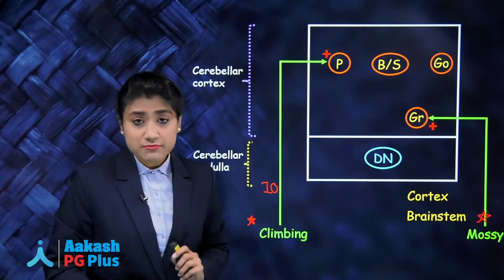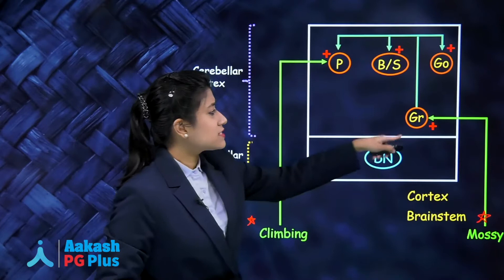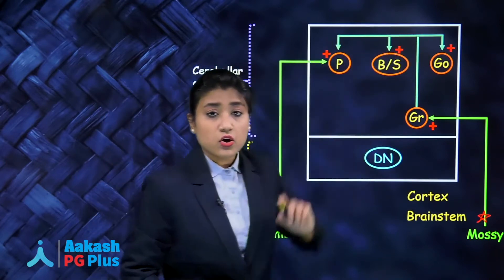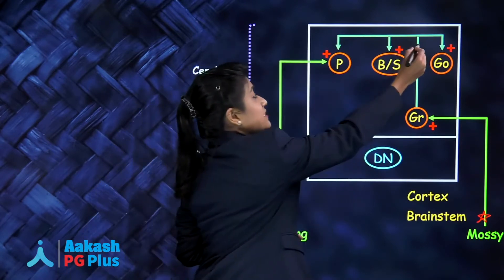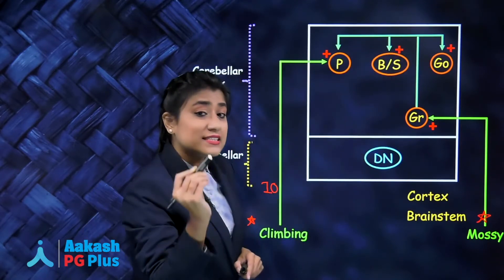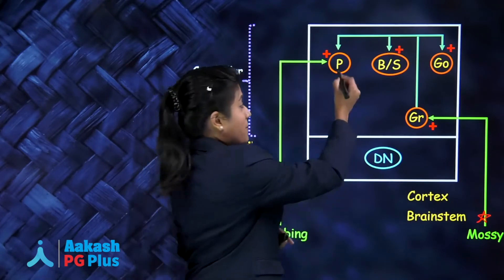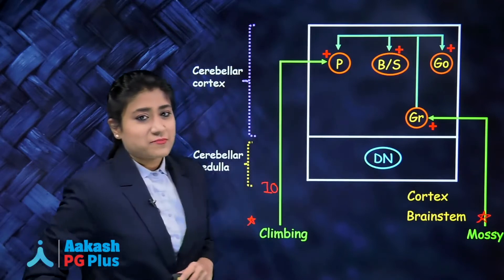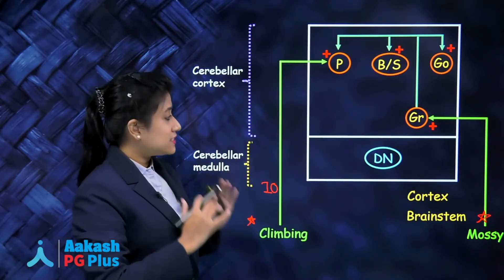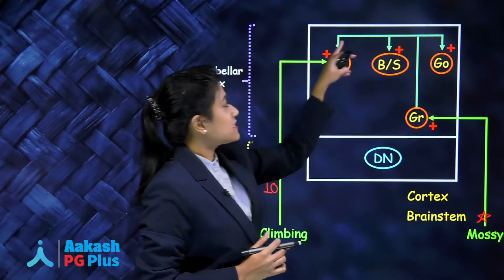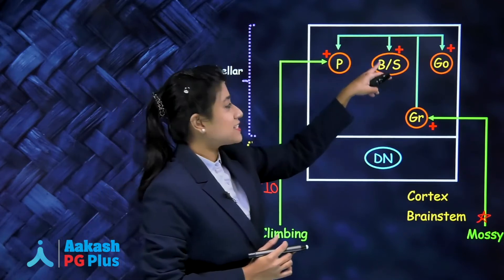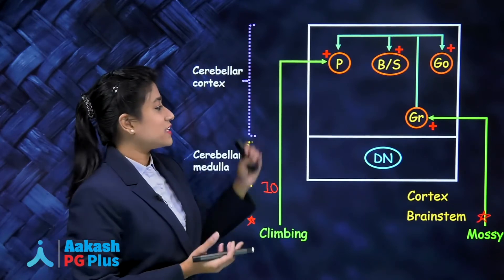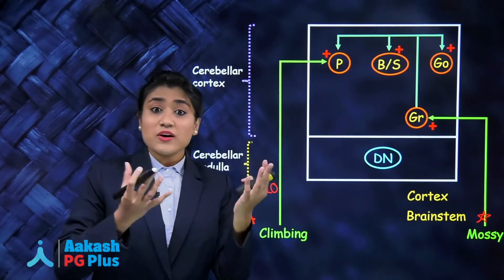Whenever a granule cell gets stimulated, it sends axons upward and forms parallel fibers in the upper layer of the cerebellar cortex. Via these parallel fibers, granule cells stimulate Purkinje cells, basket cells, stellate cells, and Golgi cells. So granule cells are excitatory to Purkinje cells, basket cells, stellate cells, and Golgi cells.